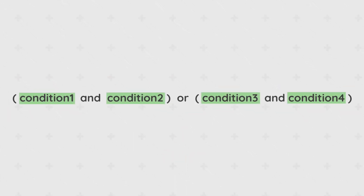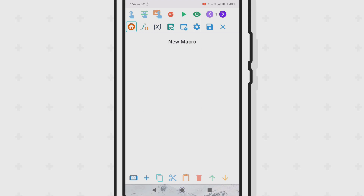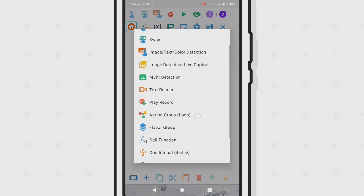An easier way to avoid confusion is to use brackets to separate the AND and OR statements. Now let's look at actually using it in Macrorify — to add an if/else conditional object, you use the plus icon.